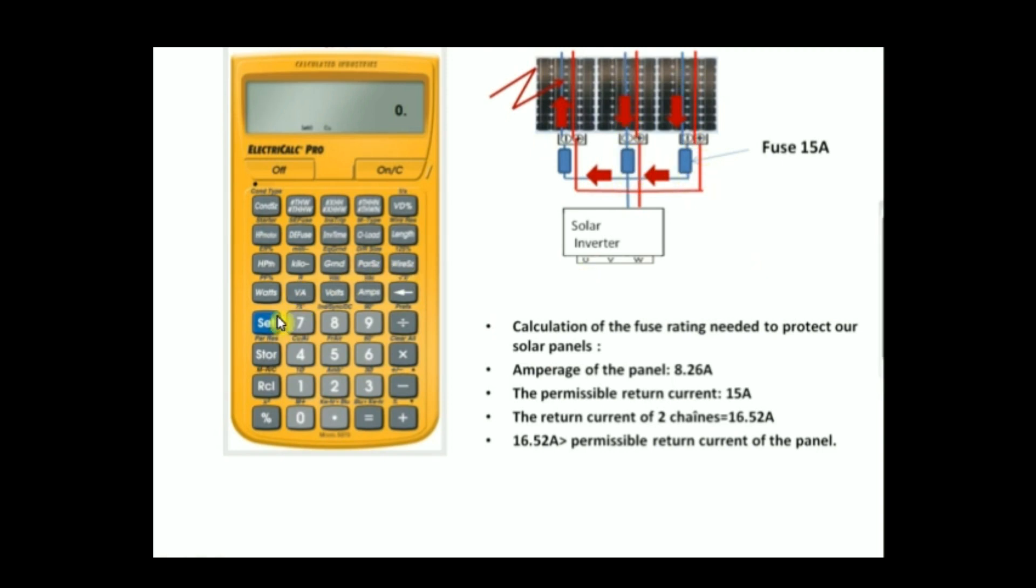Now we're going to start the calculation of the fuse rating. First of all, we have to clear all, and now we have to move into the one-phase mode. We're going to click on Set and then One. As you can see, we are in one-phase mode, and now we're going to calculate the fuse rating.